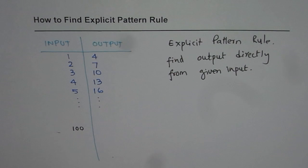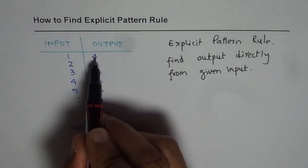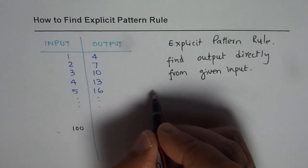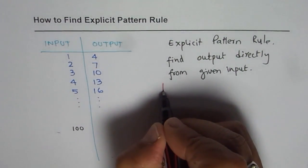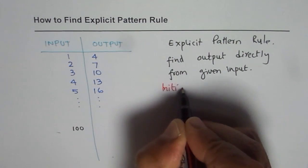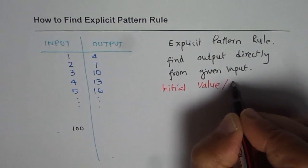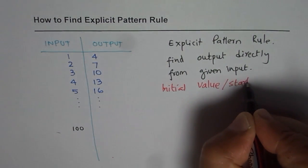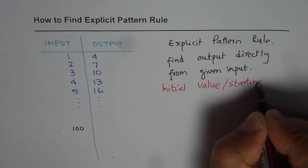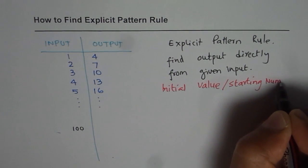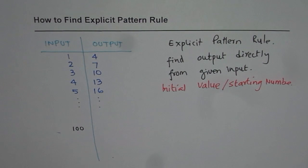Now the idea is how to find one? For that we can look into the pattern once again. We are starting at 4. We call this as our initial value or starting number. So in our case the starting number is 4.